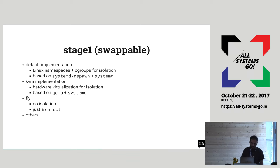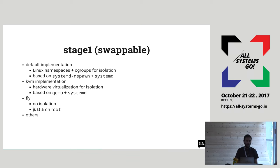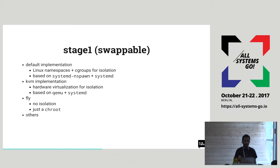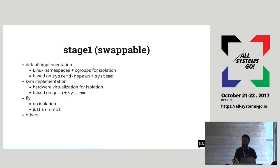One cool thing about stage 1 is that it's swappable — there are different implementations. The default one uses Linux namespaces and cgroups for isolation (what you'd call a Linux container), and it's based on systemd-nspawn. We run a systemd-nspawn container with a systemd instance inside that manages all the processes in the pod. There's also a KVM implementation that uses hardware virtualization for isolation, based on QEMU, which is useful for extra security. And there's 'fly', which is basically a no-isolation stage 1 — just a chroot — to take advantage of Rocket's image handling and signing.